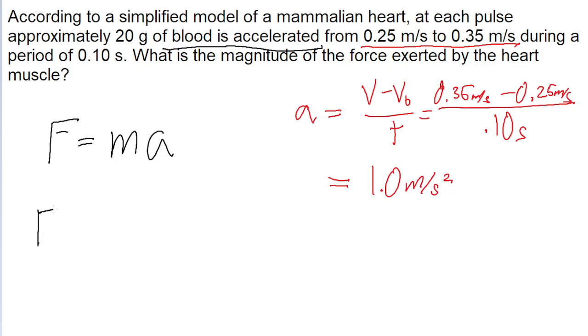Now let's apply this to our force equation, because we're told that the mass of the blood being accelerated is 20 grams. Now we need to convert this into kilograms in order for it to be in the right units. So the mass is 20 grams, which is 20 times 10 to the power of negative 3 kilograms,